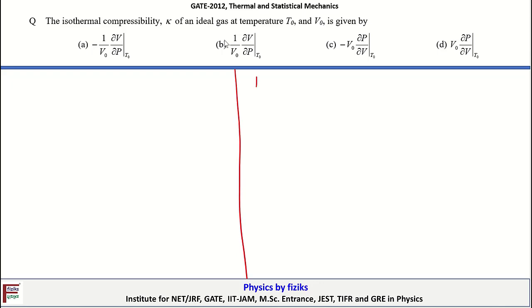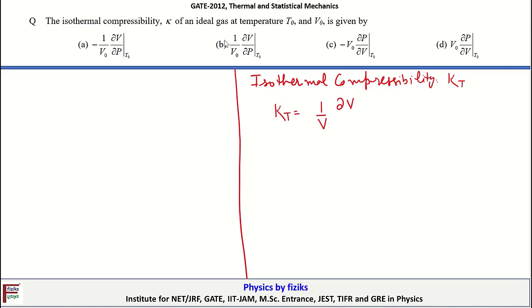Isothermal compressibility is denoted by kappa T. It is defined as the fractional change in volume, that is (1/V)(dV), with compression with respect to pressure, so delta P in the denominator. By increasing the pressure, the volume will reduce under isothermal conditions. We put a negative sign so that it becomes a positive quantity, because when pressure increases, volume decreases, making delta V negative. Therefore, to make it positive, a negative sign is introduced.